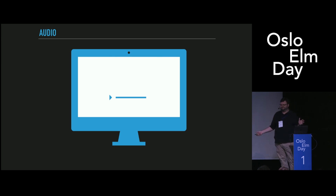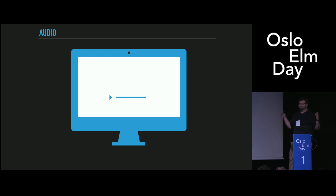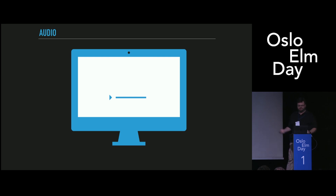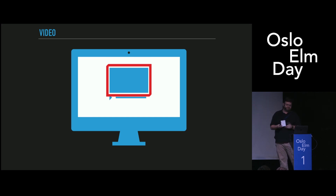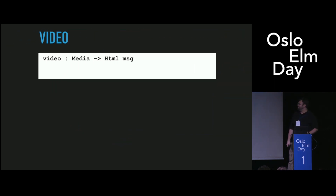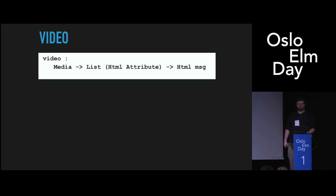But we have a bit of a problem when it comes to video. Audio exists globally — if you hit play on audio, it's not anywhere in your DOM, it just plays through your speakers. The DOM doesn't really control your speakers. But video requires you to actually put an image in the DOM. So if you've now got your media in your model, how do you put it into the DOM? The answer is with a pretty simple function that takes your media and puts it in the DOM, creates an HTML message from it. Because it's just a DOM node, we can style it however we want, give it a border, animate it, put it all over the screen. We don't have to worry about keeping it in sync because it's controlled centrally from your control room and your update function.